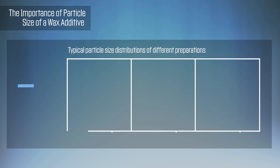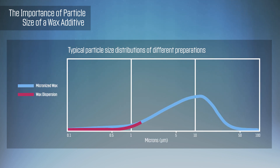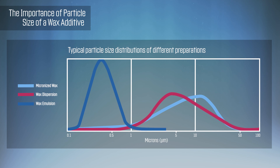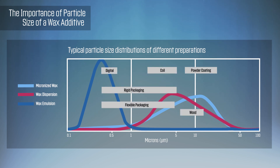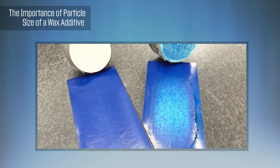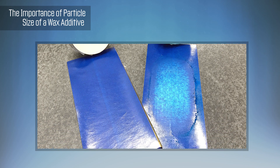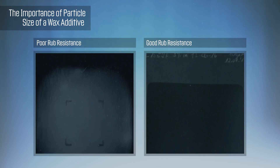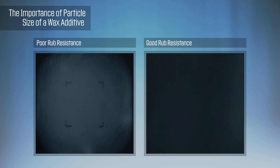Particle size distribution is the other parameter that impacts performance. In general, a narrow distribution centered around the average is preferable to ensure that the maximum number of surface-modifying particles are at the coating-to-air interface and performance is optimized. If the distribution is not centered around the average or is wide, the additive is not as effective as it should be, and this may also negatively impact other ink and coating properties.